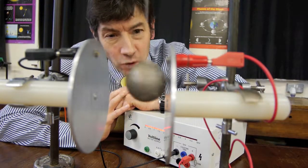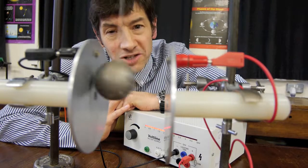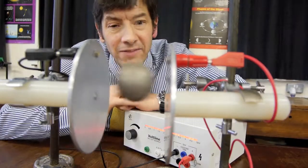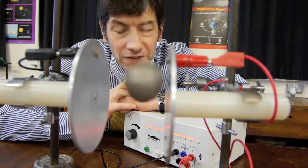the ping-pong ball feels less force and so goes more slowly. If I turn the voltage up and the electric field gets stronger, then the ball goes faster.